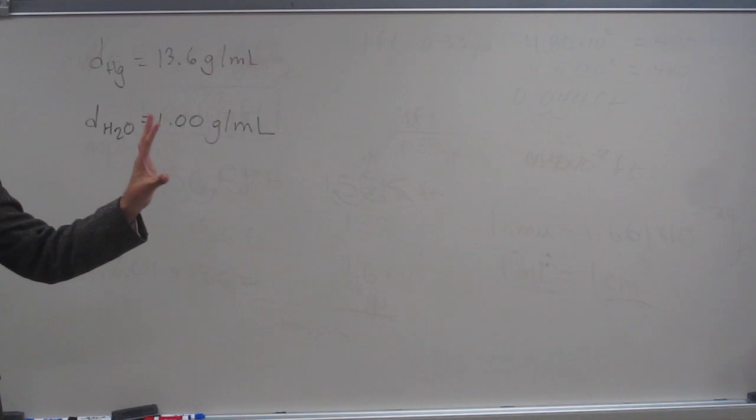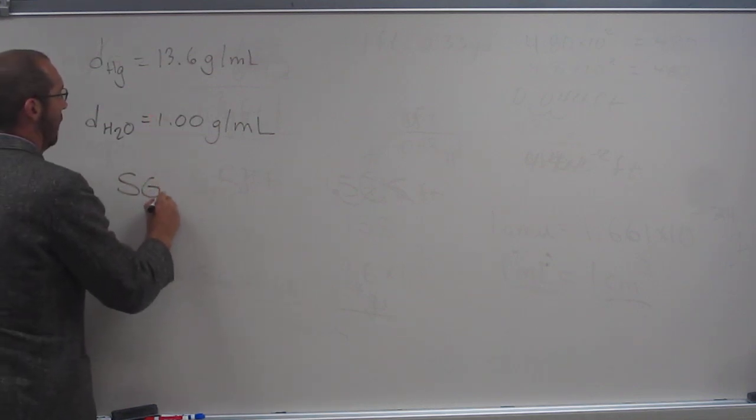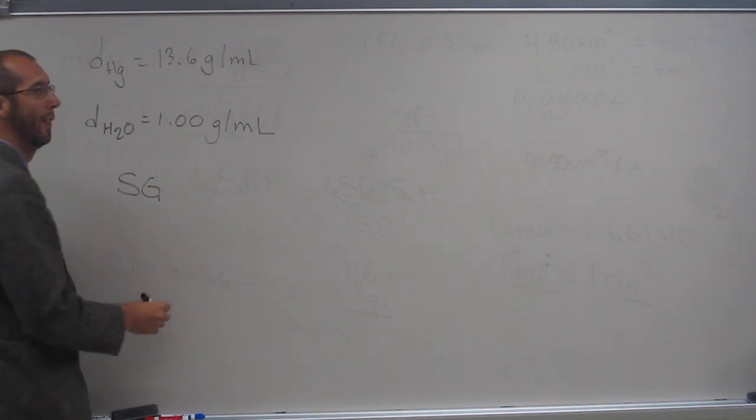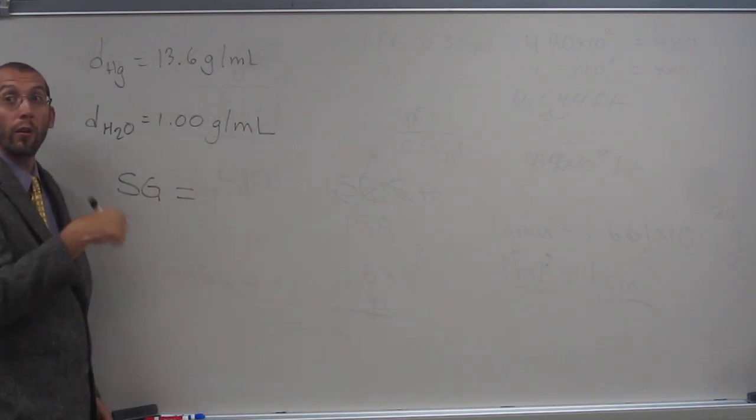So how do we do specific gravity? Anyone want to help me? Density of the object over the density. Yeah, so density of the object over the density of water at 4 degrees Celsius, right?